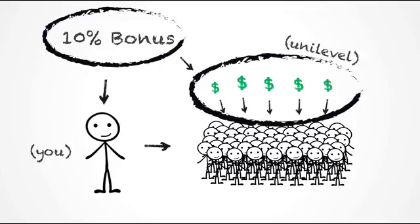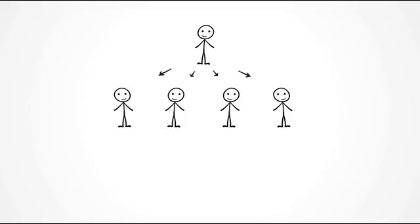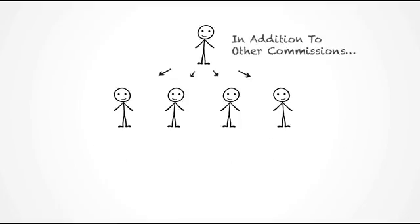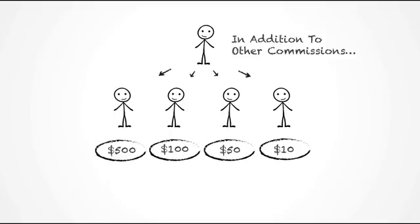So let's say that you have personally enrolled four people and that these people are making $5,000, $1,500, $500, and $100 respectively. In addition to your other commissions you would earn $500, $150, $50, and $10 from these people respectively for a total of $660.